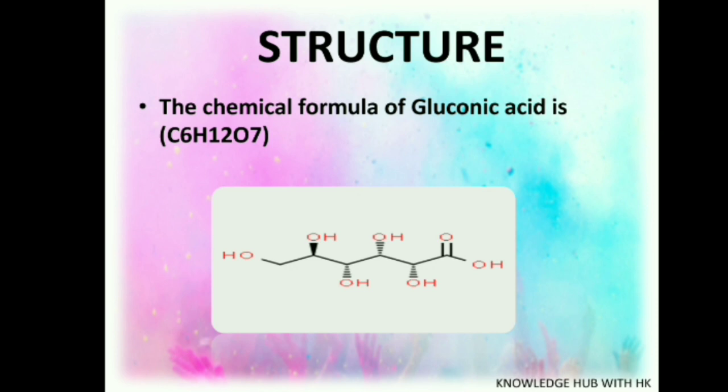The structure of gluconic acid has been given here, and its chemical formula is C6H12O7.